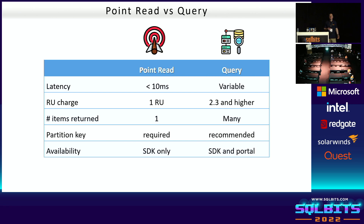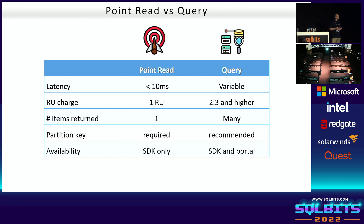There's a very cost-effective way to get data from Cosmos DB — the point read. You pass the partition key and the document ID, telling Cosmos DB exactly where your data is. It doesn't need to run a query optimizer. Point reads cost just 1 request unit. In contrast, a regular query requires a query optimizer and costs at least 2.3 RU or higher depending on complexity. If your application always has the ID and partition key, you can build a very affordable Cosmos DB solution by using point reads instead of queries.